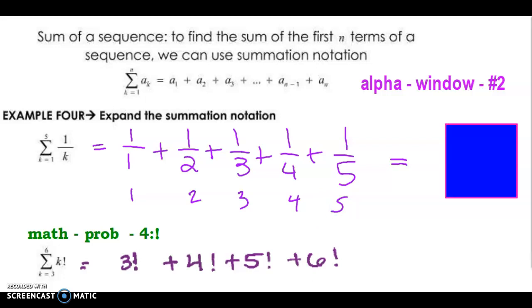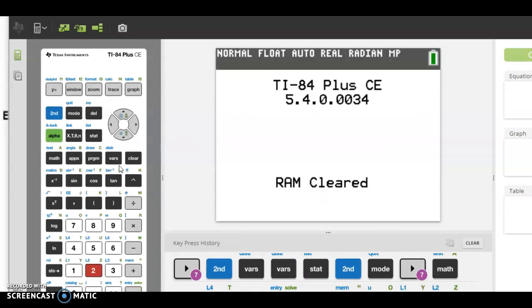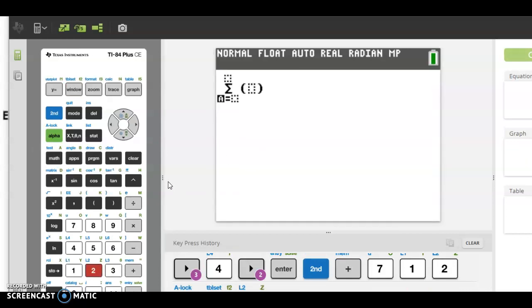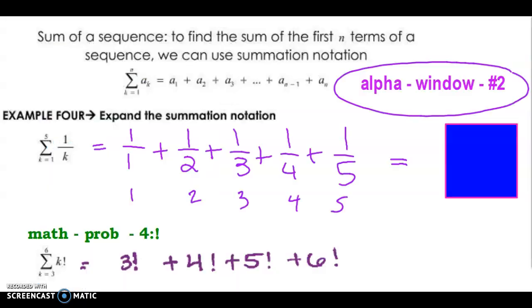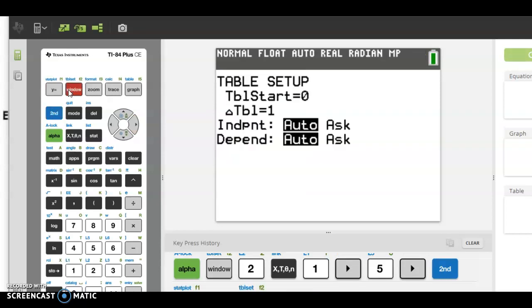The calculator can do that for you. If you go to alpha, window, and then number 2. So if I go alpha, window, and then option 2, which you'll see is summation. And you can use whatever variable. I usually just use x. Even if they use k, I just put x, because it's easiest. I'm going from 1 to, I believe, 5. And what was the formula? 1 over k. Where do I go? Here, 1 over k. So I'm going to do, I like to use second y equal, no, that's not right.